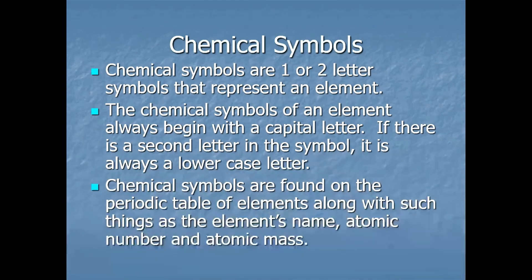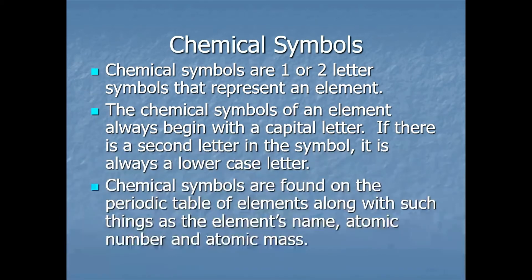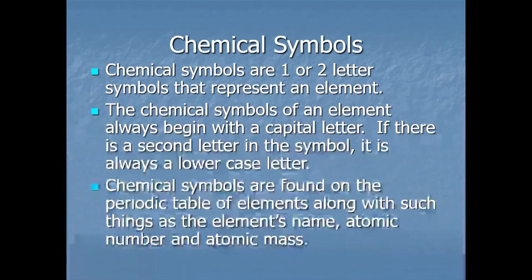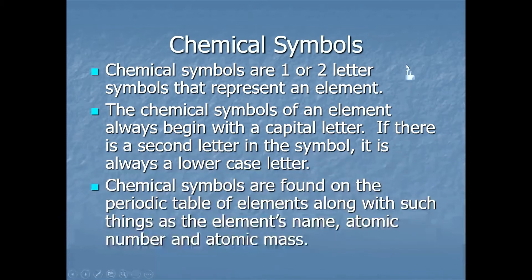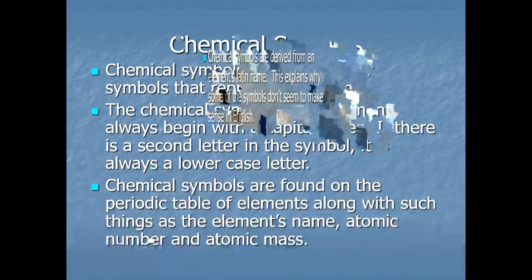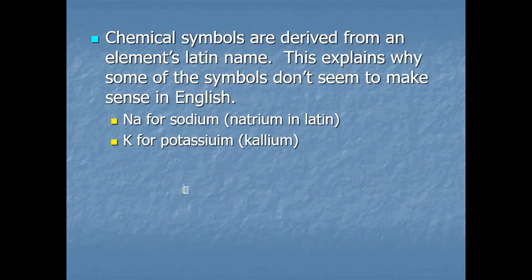It's important to recognize chemical symbols because when we write chemical formulas, we use them. Compounds have chemical formulas made up of the symbols of the elements that make them up. That's why water is H2O — H is the symbol for hydrogen and O is the symbol for oxygen. The 2 represents how many hydrogens there are relative to oxygens.